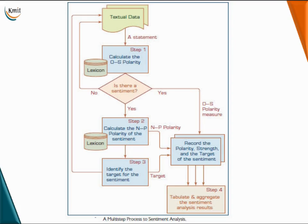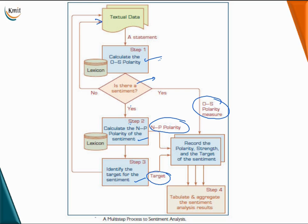This is the multi-step process for sentiment analysis. For the text data, we first calculate the objectivity-subjectivity polarity. If it is subjective — that is, if it has any sentiment — we go to step 2; otherwise, if it is a fact, we take the next statement. If it has sentiment, we perform step 2, which is calculating the negative-positive polarity. Then step 3 identifies the target for the sentiment. We record the OS polarity, the NP polarity and its strength, and the target, then perform step 4 — tabulate and aggregate the sentiment analysis results.